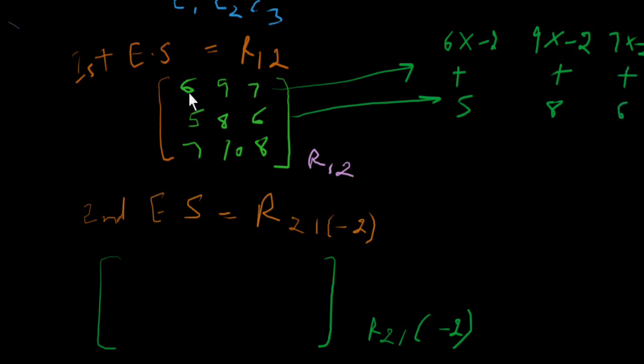Now the first row will show as it is: 6, 9, 7. And there will be a change in the second row. Second row will be 6 minus 2...